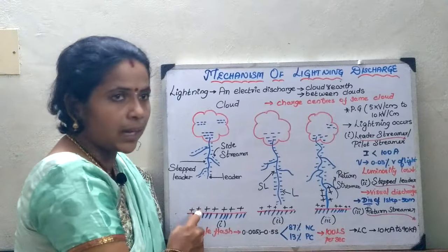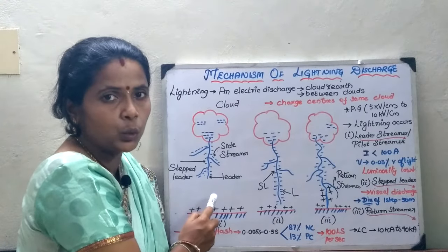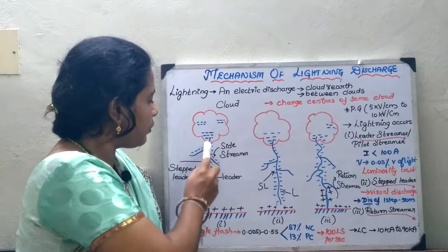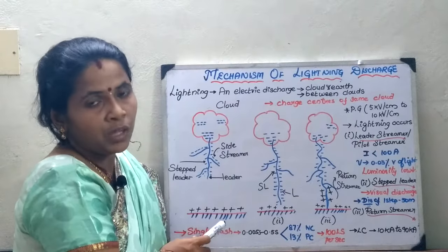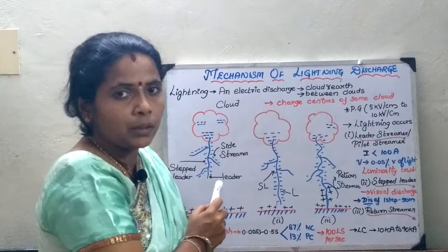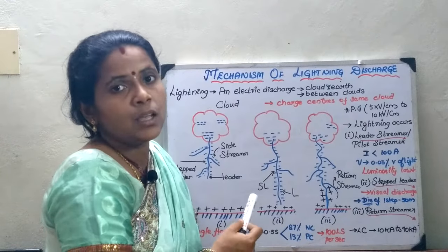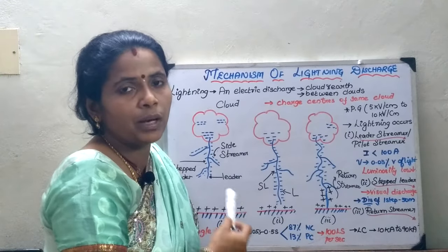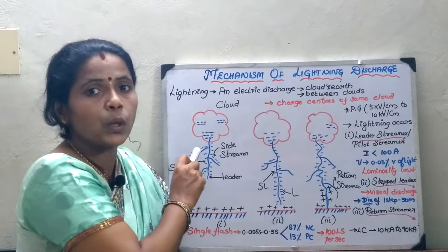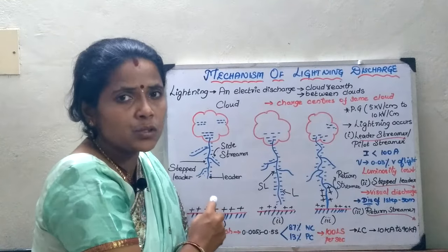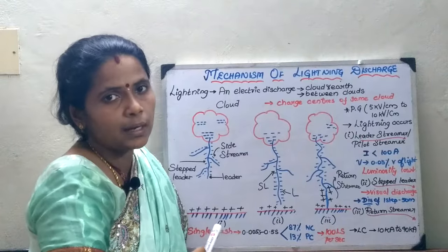In the first case, the lightning does not have sufficient energy to break down the air, so after a few seconds it vanishes and does not reach the ground. Thunder is associated with lightning because when lightning occurs, it heats the surrounding air, causing it to expand, which produces the sound we call thunder.